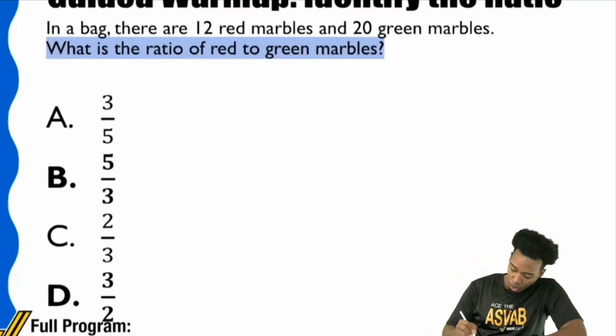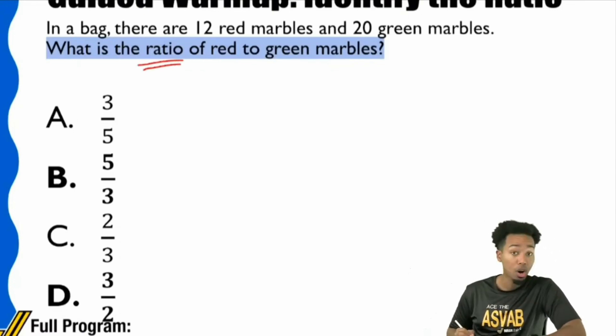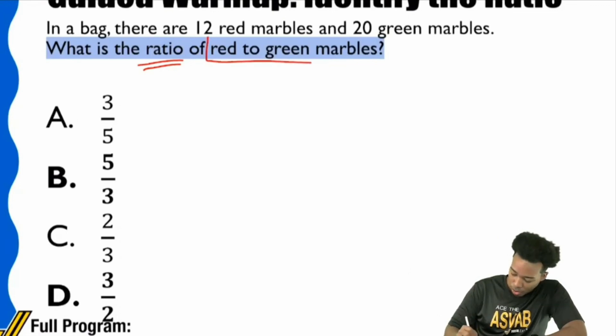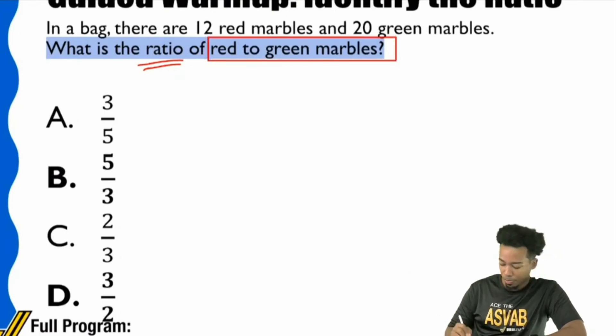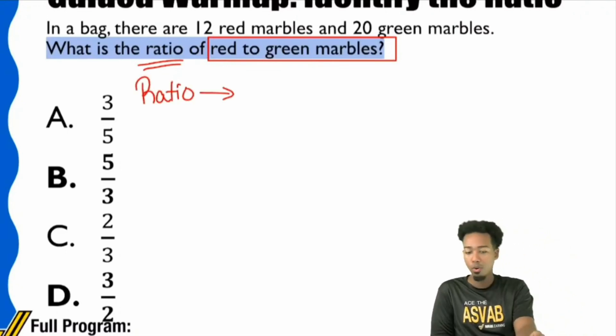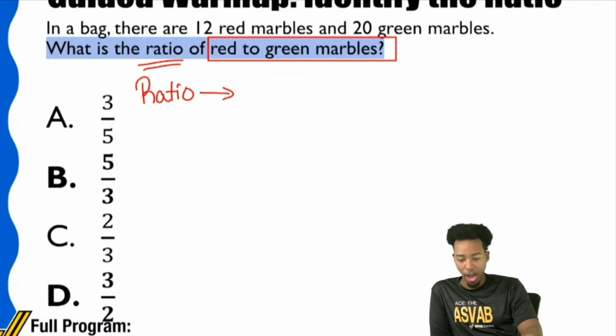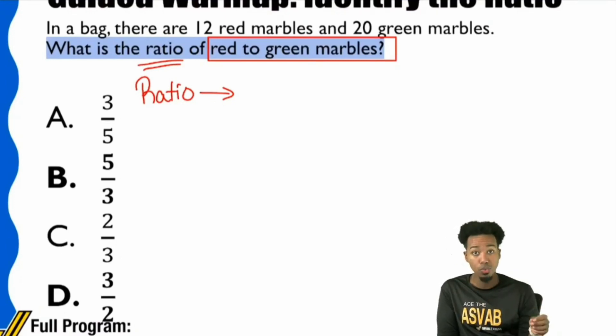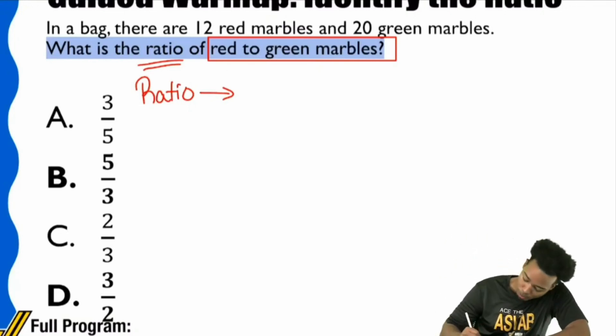What is the ratio of red to green marbles? They tell you exactly what to look for. Quick question: What's another word for ratio? It's not proportions. Fraction, exactly. If you didn't know that, write this down. Ratios and fractions are literally the same exact thing. There are different ways to write them using colons or words, but they are literally the same thing. So ratio means fraction.